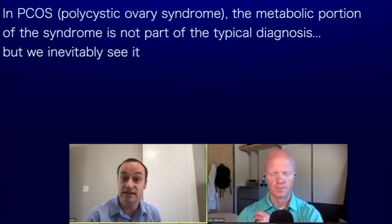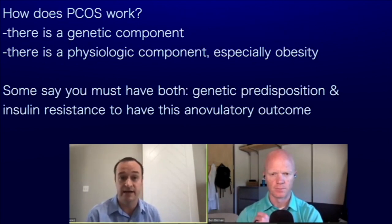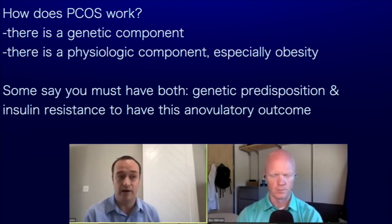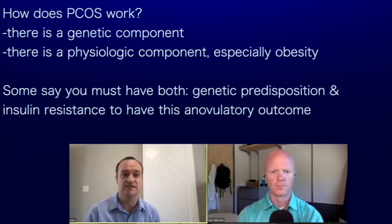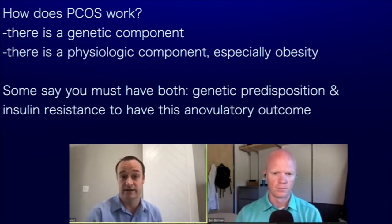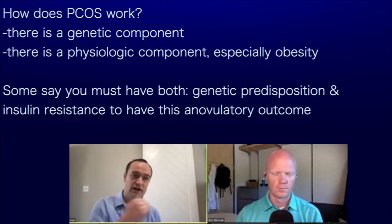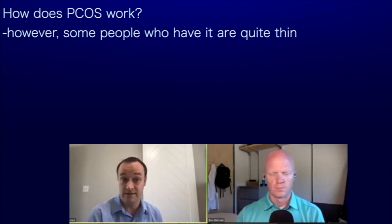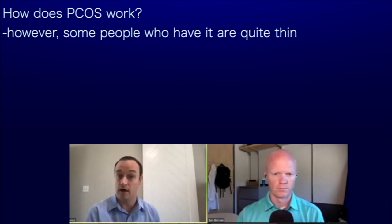How PCOS works is still up for debate. There's definitely a genetic component, but also a physiologic component — particularly related to obesity. Some say it has a two-hit hypothesis: a genetic predisposition to insulin resistance and oligo-ovulation, and then if people hit a certain metabolic tipping point with obesity or other insulin resistance, they cross that threshold. Not all people are the same with PCOS — some are quite thin and have it, some have more body fat.